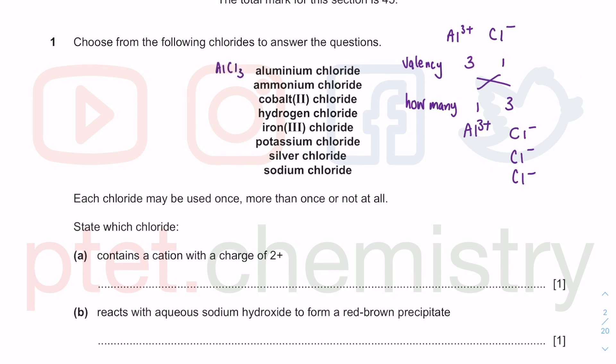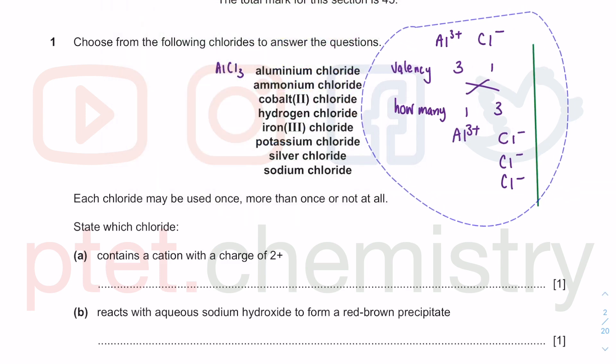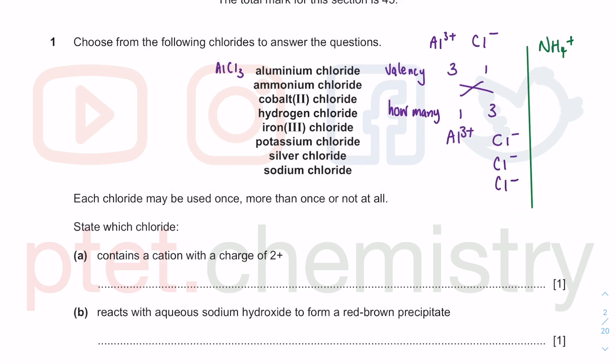Next, we have ammonium chloride with NH4+ for the ammonium ion. Ammonium ion is the ion you test for in paper 3 practical studies. You add some NaOH and it displaces ammonia gas, which you test with red litmus which turns blue. Because of the +1 and -1 charge, you just need one of each ion. Ammonium chloride is NH4Cl.